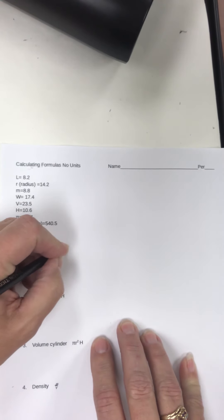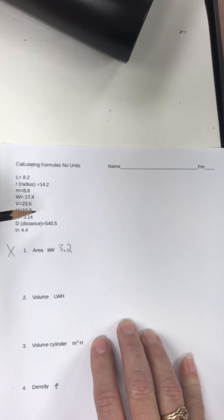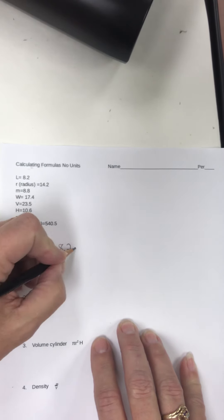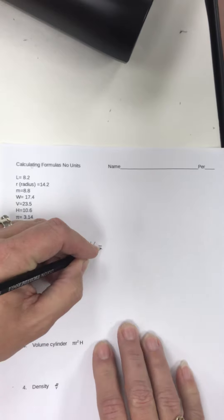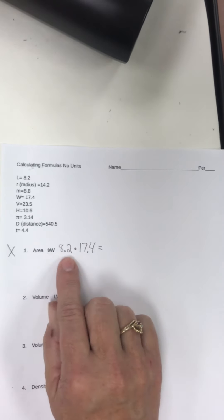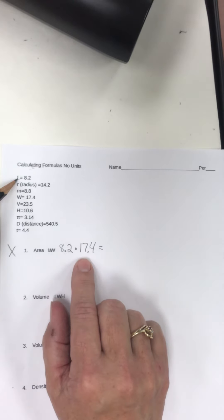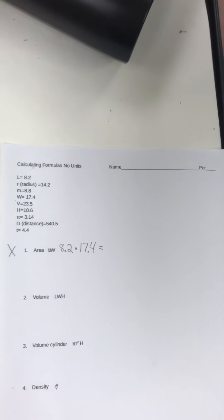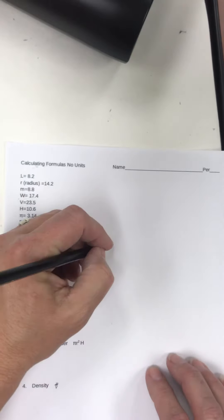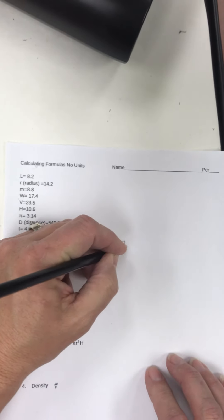You're going to replace the L with what L means. L is 8.2. And by the way, tomorrow we're going to be looking at these with units. We don't have units today. And then you're going to multiply it. Again, I'm not going to use an X. I'm going to use a dot times W, 17.4. Then notice all I did was replace my L with what L measured out to be, and I replaced my W with what W measured out to be. And I wrote it out. You must write it out. You must write all of it out. You are so much more likely to get the right answer. So 8.2 times 17.4 is equal to 142.68.